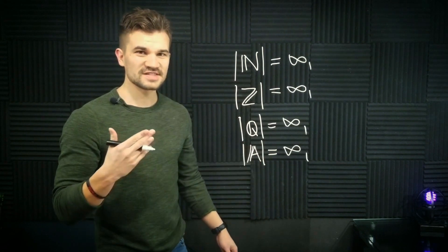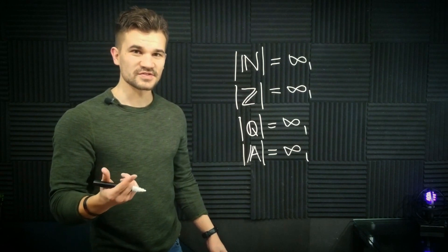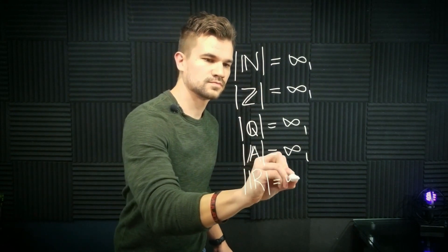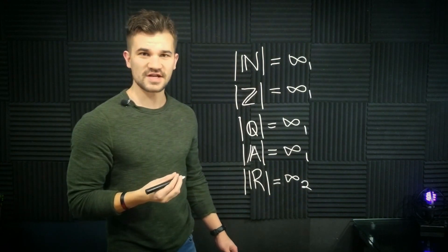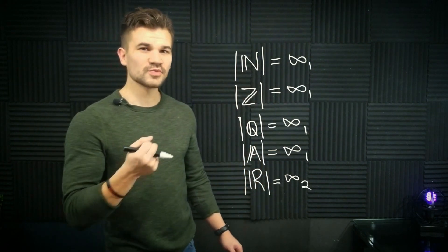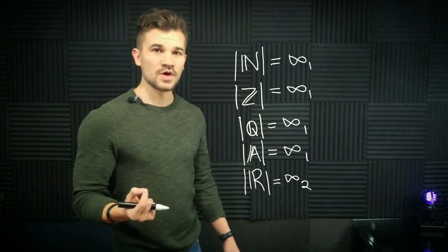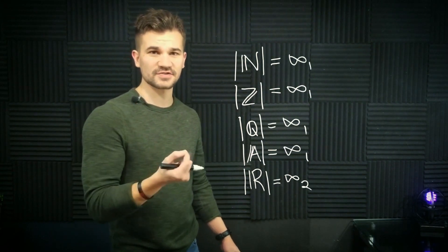So which infinite set does have a larger cardinality than the naturals? Well, the answer is the real numbers. The cardinality of the real numbers is larger than the cardinality of the natural numbers. We'll call that infinity two. So how can we show that the naturals have a strictly smaller cardinality than the reals? We just have to show that it's impossible to have a surjective function from the naturals to the reals.